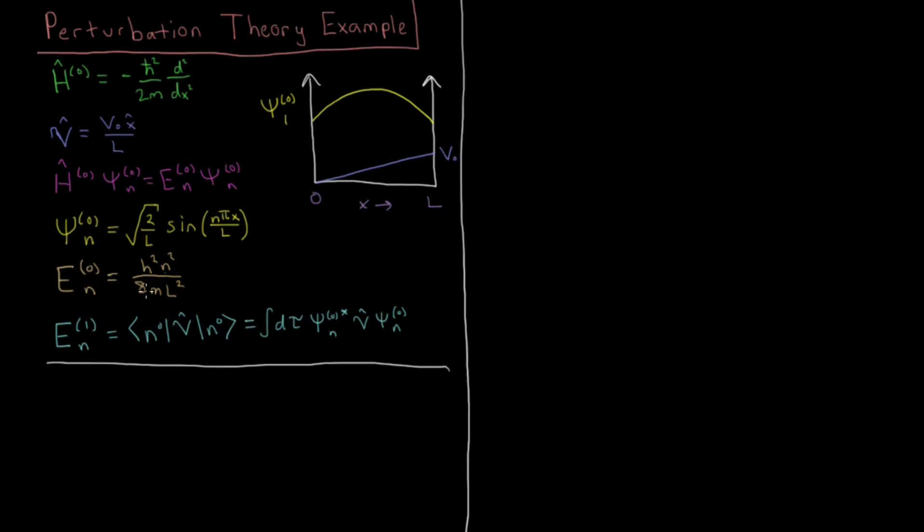So we derived previously that the first order perturbation theory correction to the energy for this system, so correcting for the fact that our Hamiltonian is not this reference system but is this perturbed system, perturbed away from whatever the reference system was, the first order correction to the energy, this E1 at a given quantum number n, is going to be this integral.